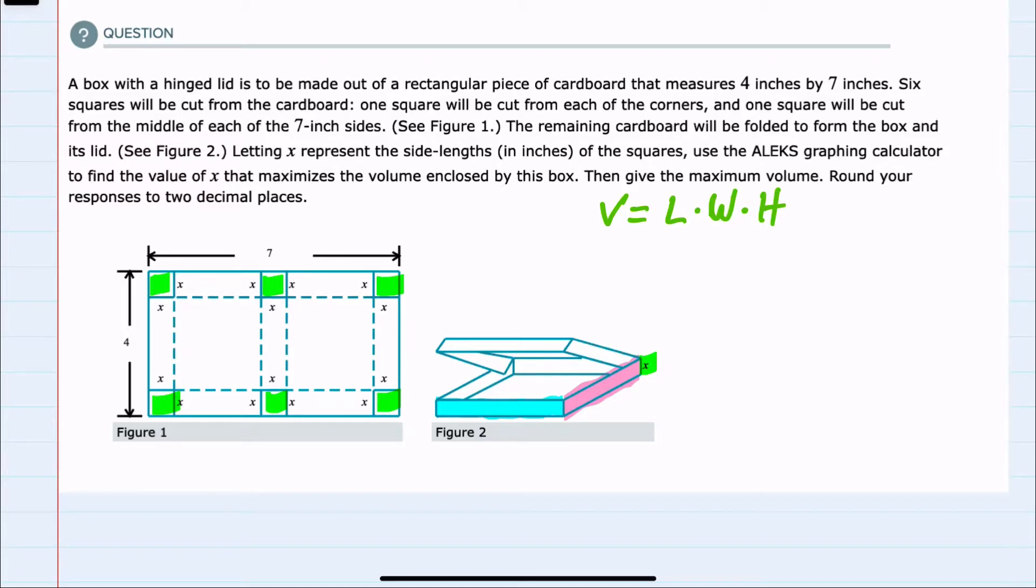I'll call that the length. From our sketch here, that will be from here to here. I know that the total length before folding was 4, but I'm taking out 2 x's. There's an x on each corner that I need to remove from that 4 inches. So this length will be 4 minus 2x.